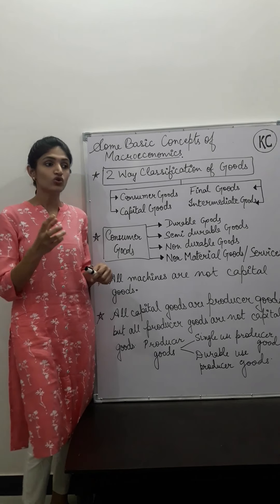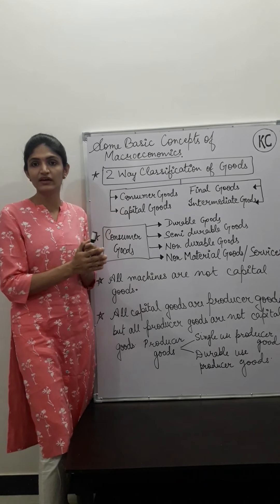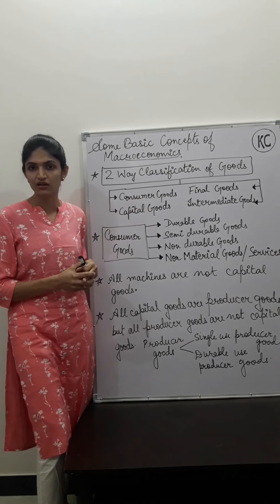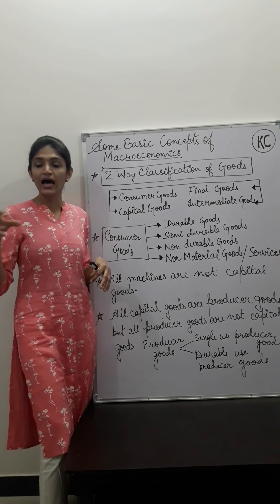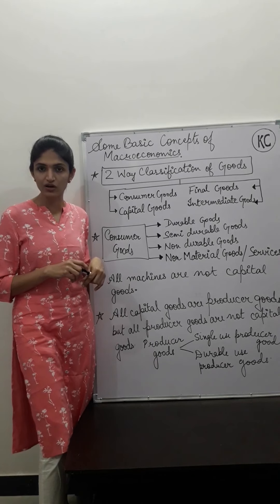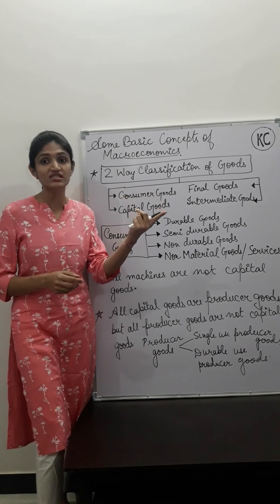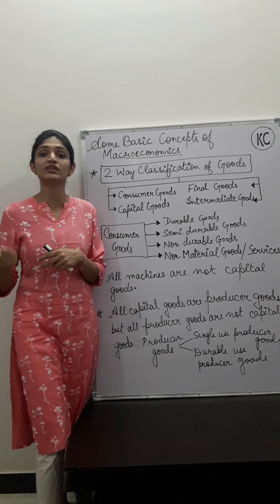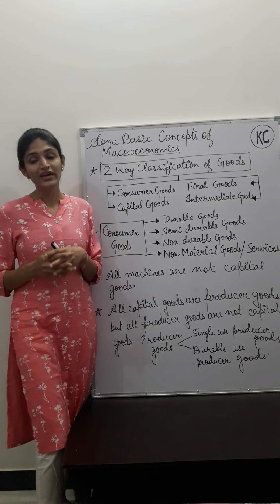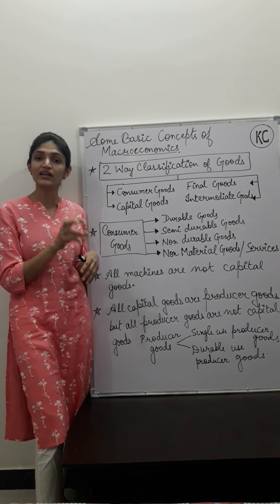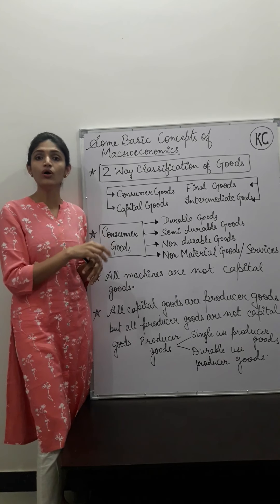For example, take a mixer grinder — a common machine. If it is used at home by a consumer, then it is a consumer good. But if a producer uses it in production with the motive of earning profit, then it becomes a capital good. So whether a machine is a capital good or consumer good depends on who is using it and for what purpose.